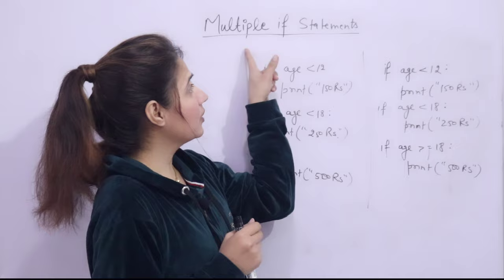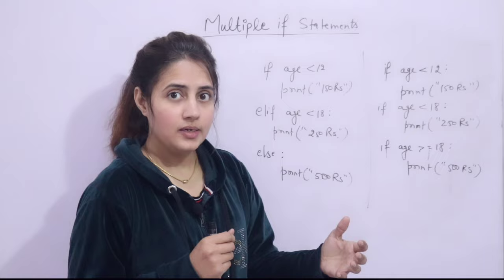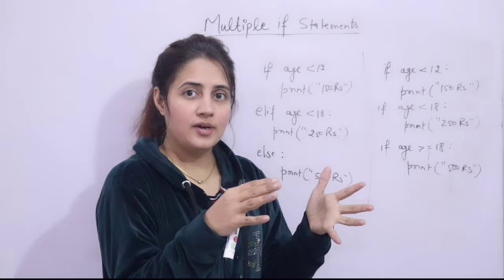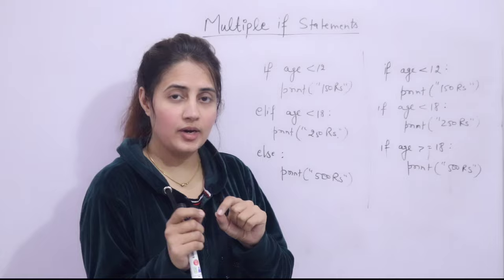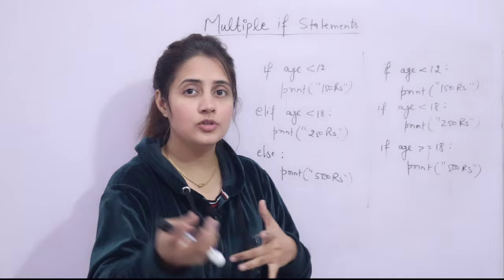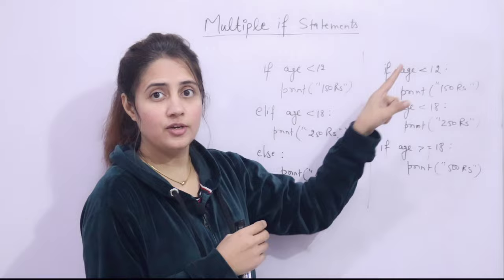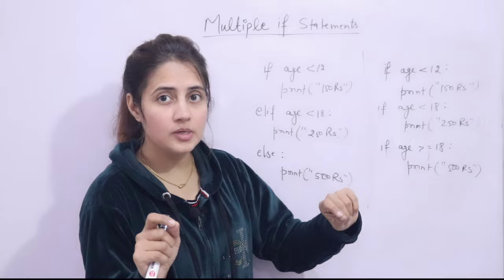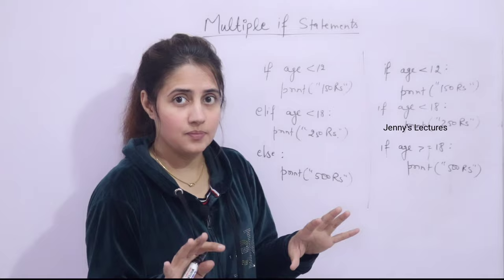In one of the previous videos, when we were discussing nested if, nested if-else, and elif statements, we took an example: if your height is greater than or equal to three feet, you can ride the roller coaster. Then they ask your age — if your age is less than 12 you pay 150 rupees, if between 12 and 18 you pay 250 rupees, and if greater than 18 you pay 500 rupees.